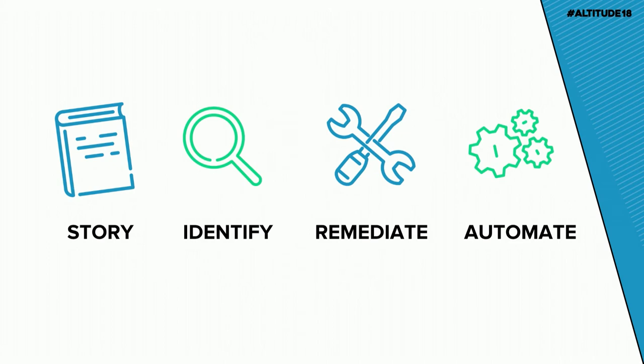These are stories we thought were really important to share — first to give you an idea of what's going on in the IT landscape, and also to help you identify these risks in your own environments. We're going to follow a consistent structure today: we'll start with a story from one of our implementations, then show you how to identify that risk. No need to take a ton of notes — we have implementation guides we'll send you directly after this, showing you step by step how to set up and find every single one of these. After that, we'll show you how to remediate and ultimately automate.